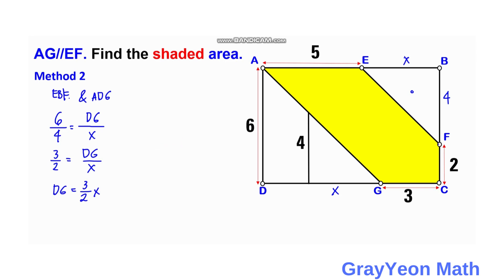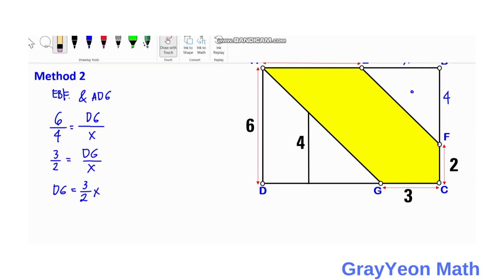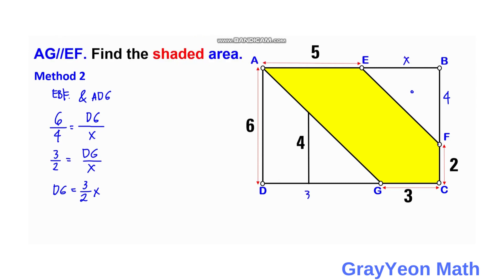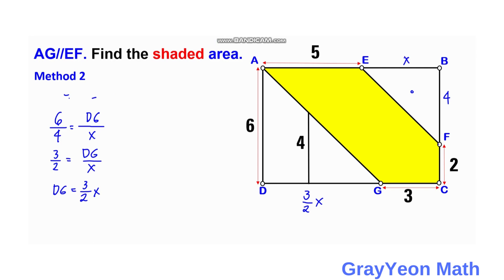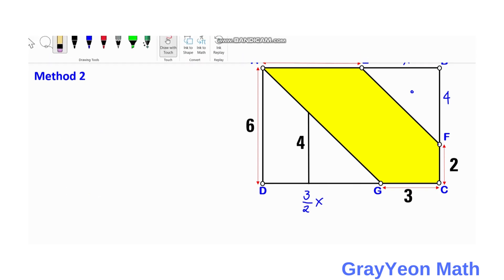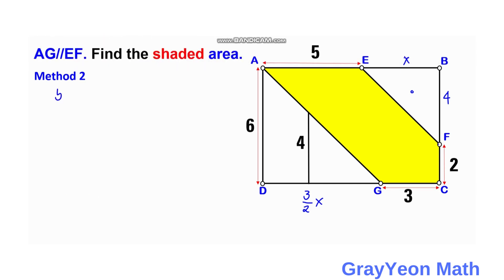So this whole length D, G is actually 3 over 2 X. And since this is a rectangle, we can actually make an equation of the length of the top and the bottom side. So we have here 5 plus X. 5 plus X is equal to 3 halves X plus 3.